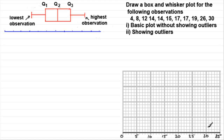Now, what is our lowest value? It's clearly 4, so we need to mark it in with a little dash. So we go to 4 on this scale and place a mark there for the 4. And the highest observation is 30, so we go along to 30 and mark that in.